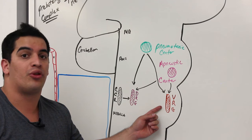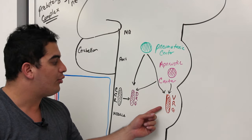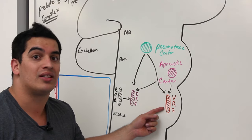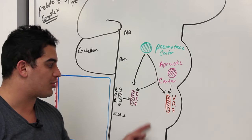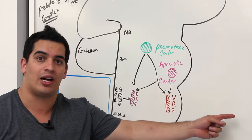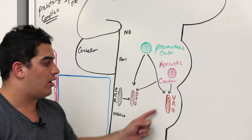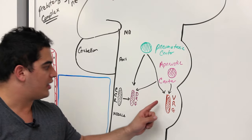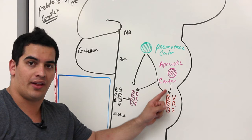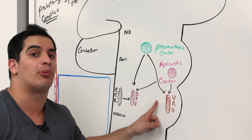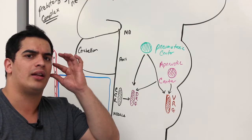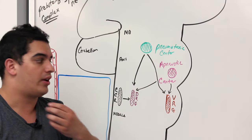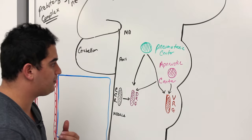Another nucleus within the VRG is called the nucleus retroambiguus, which consists of both inspiratory and expiratory neurons — it can control inspiratory signals going to the diaphragm and external intercostals, as well as supply expiratory signals. The last one is the nucleus ambiguus, which is responsible for inspiration by controlling the soft palate, uvula, pharynx muscles, and larynx muscles.